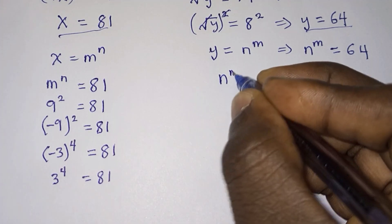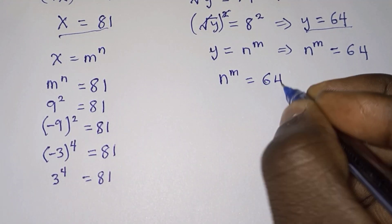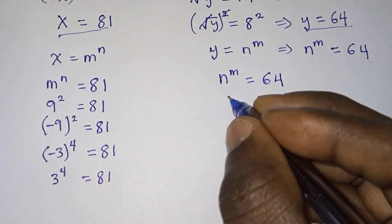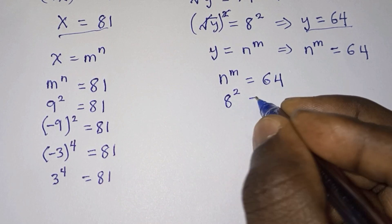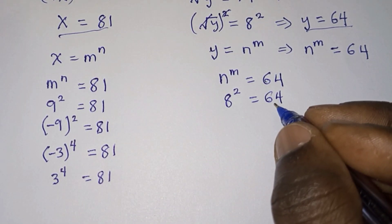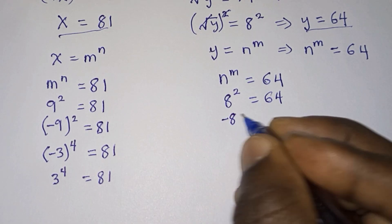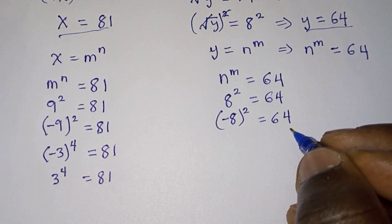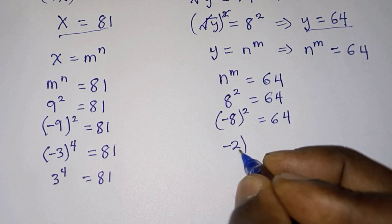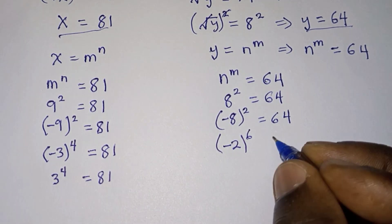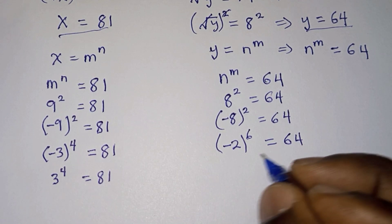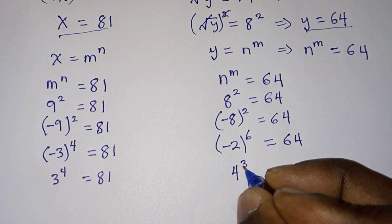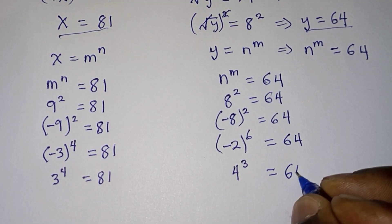We also let y equal n to the power m, so when y is 64 we have n to the power m equals 64. This is possible when n equals 8 and m equals 2 (giving 64), or when n equals negative 8 and m equals 2 (also 64), or when n equals 4 and m equals 3 (also giving 64).